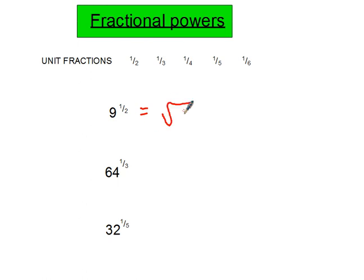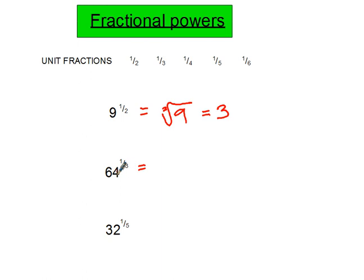So 9 to the power of one half simply means the square root of 9 — occasionally we write the 2 inside the root sign as well. The square root of 9 means what number times by itself is 9, and that's 3. For 64 to the power of one third, that's the cube root of 64 — what number times by itself times by itself again gives 64? That's 4.